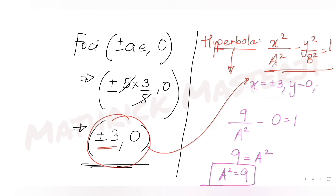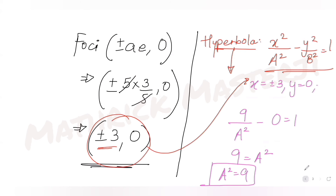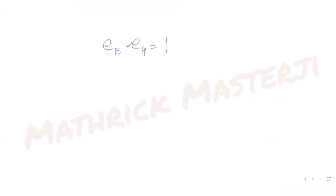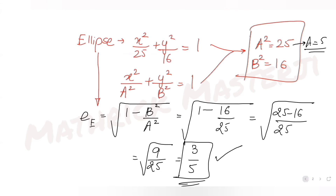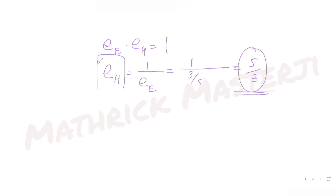So a² = 9 — this matches all answer choices so far. Now using the condition that the product of eccentricities equals 1: e₁ × e₂ = 1, so e₂ = 1/e₁ = 1/(3/5) = 5/3. The eccentricity of the hyperbola is 5/3.